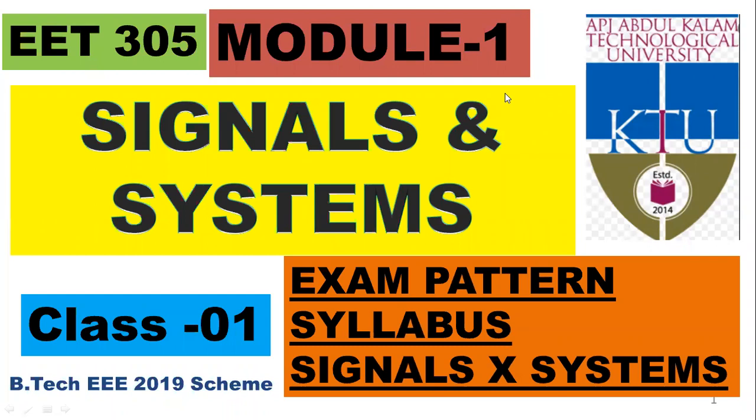Good morning all, welcome to another session of Signals and Systems. Today we are starting the subject Signals and Systems, which is EEE WD 305 for the EEE 2019 scheme, covered in your fifth semester. In this session I will be discussing the exam pattern, the syllabus overview across the five modules, and what is meant by a signal, a system, and the difference between them.